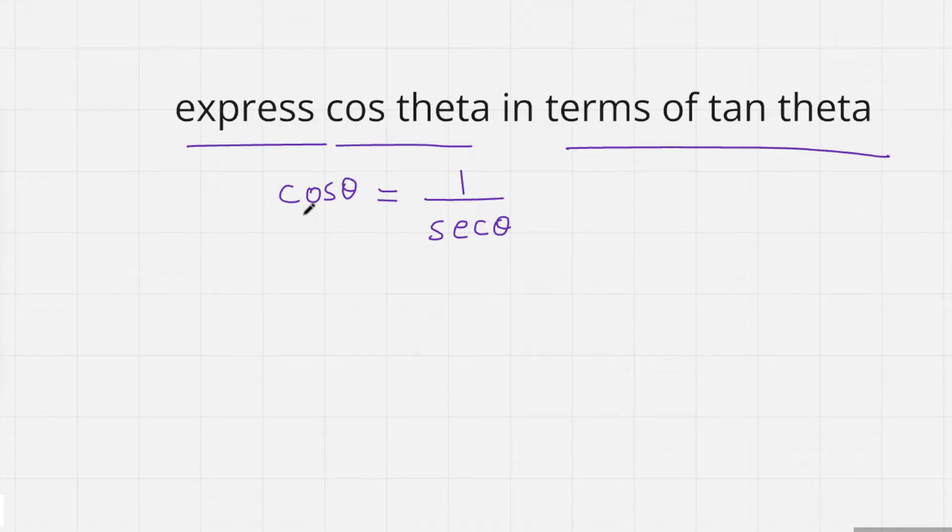Then you can write cosθ in terms of tanθ. The identity is sec²θ - tan²θ = 1.